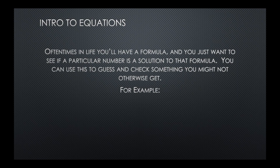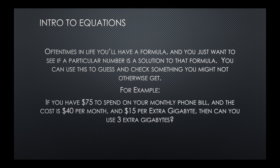For example, let's say you have $75 a month budgeted to pay your monthly phone bill — that's your allowance, or you're making $75 a month from a job, or whatever reason. You have $75 a month to pay your phone bill. Your phone bill is $40 per month and that includes a certain number of gigabytes, but if you go over it's $15 per extra gigabyte.